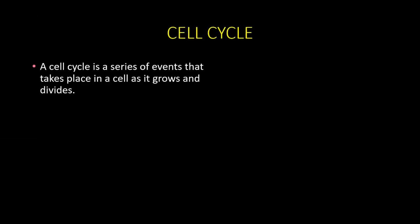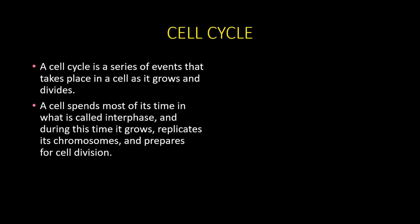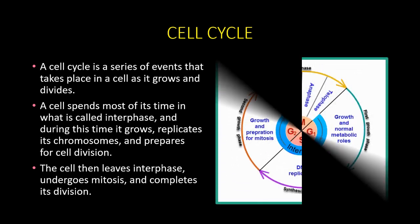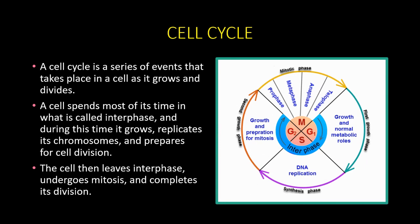A cell cycle is a series of events that takes place in a cell as it grows and divides. A cell spends most of its time in interphase, where it grows, replicates its chromosomes, prepares for cell division, and carries out metabolic activities. Once ready for division, the cell leaves interphase and undergoes mitosis. Interphase is the biggest phase — during it the DNA will replicate, and the cell increases its content in preparation for division.